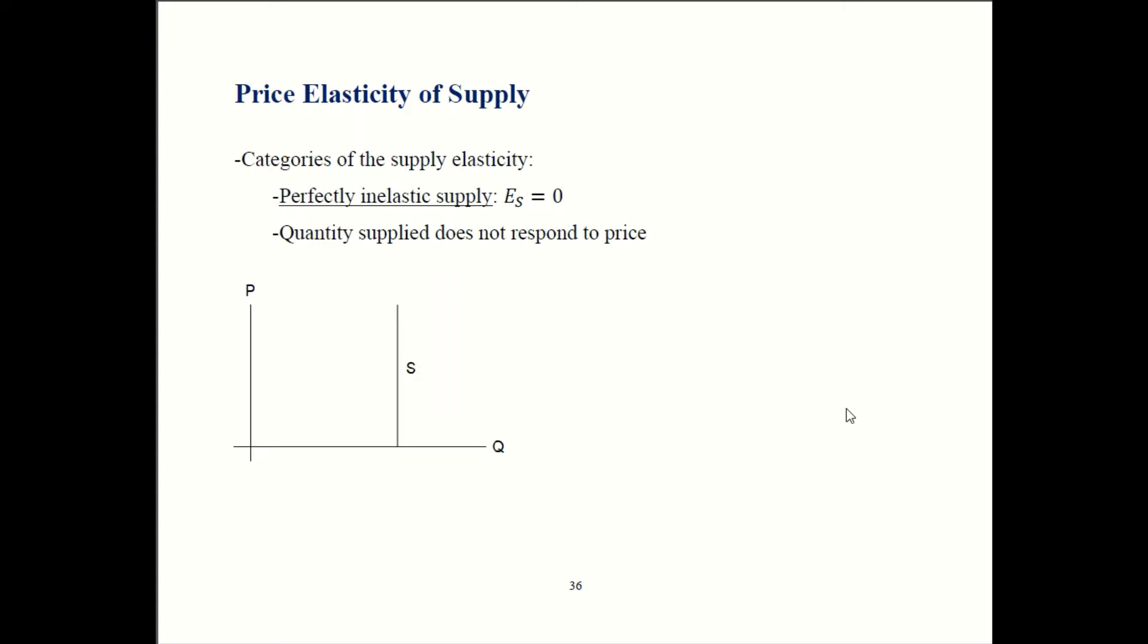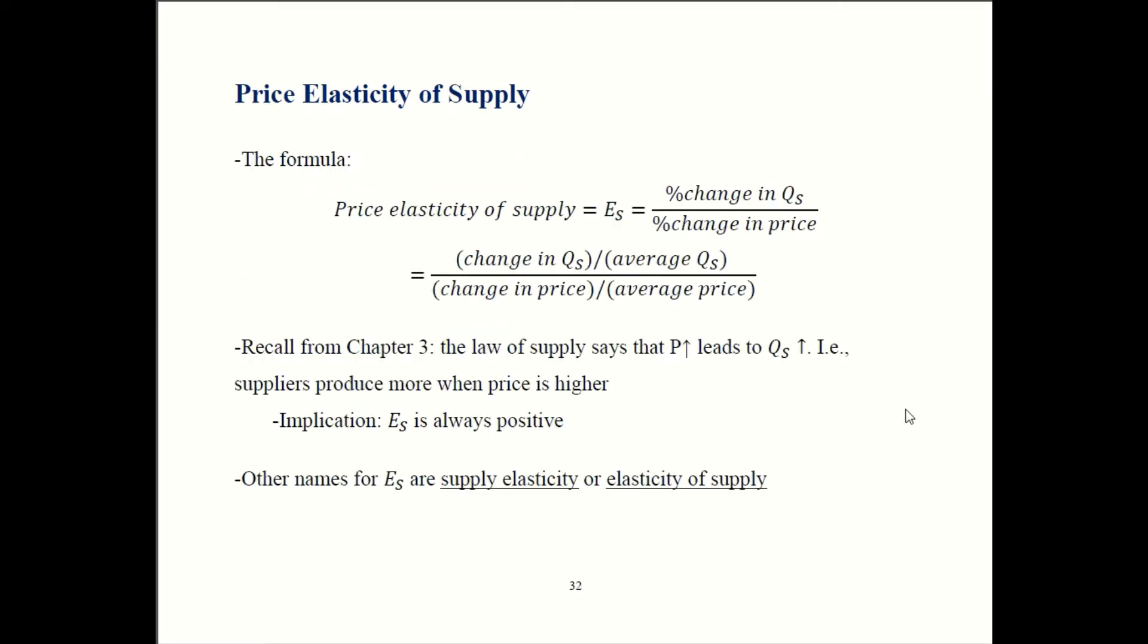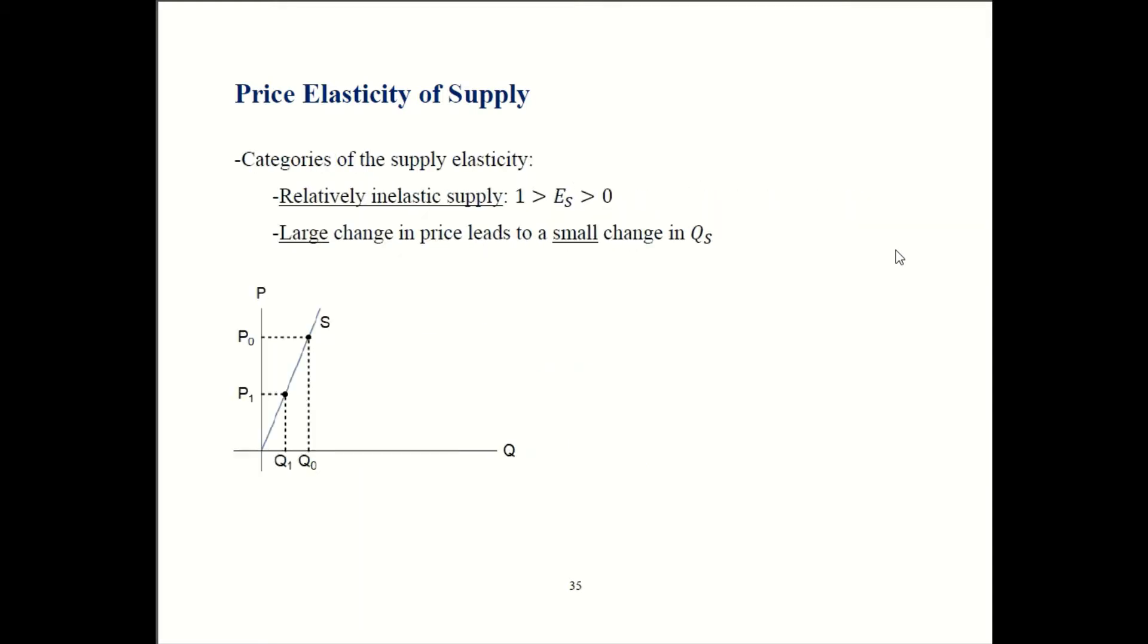Last possibility is perfectly inelastic supply. That means that quantity does not respond at all to price changes. So change in quantity is always going to be zero percent. Plug that in back here, you get zero percent over change in price. Zero percent over number is going to be zero. So your elasticity is zero when you have perfectly inelastic supply like you have over here. The graph shows you quality just never changes. It's always over here.